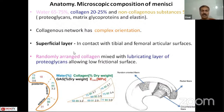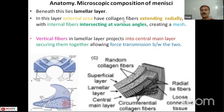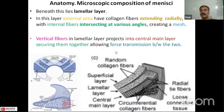The superficial layer is in contact with the tibial and femoral articular surfaces. The collagen fibers are randomly arranged and mixed with a lubricating layer of proteoglycans, providing a low-frictional surface. Beneath the superficial layer lies the lamellar layer, which has an external area of radially oriented collagen fibers that intersect with internal fibers at various angles, creating a mesh. The vertical fibers of the lamellar layer project into the central main layer, securing them together and helping in the transmission of force between the two.